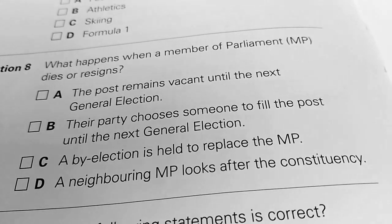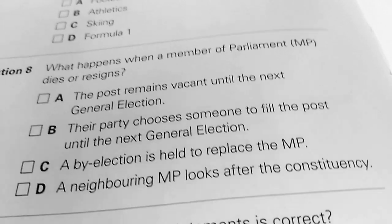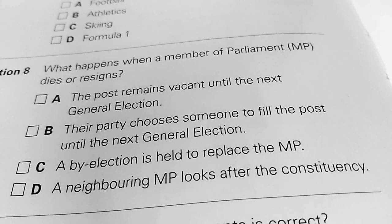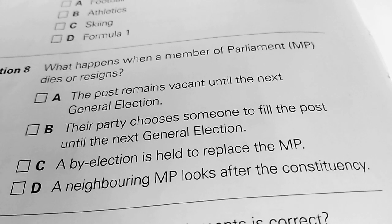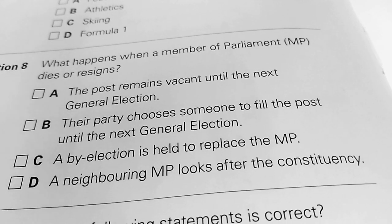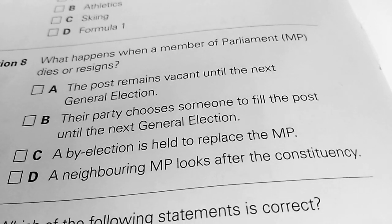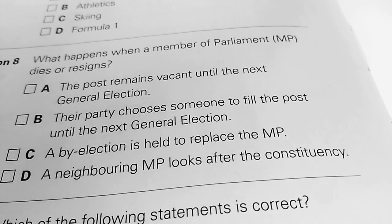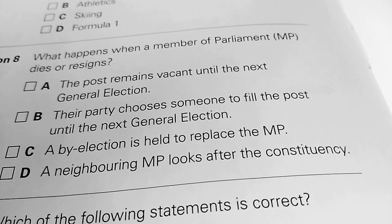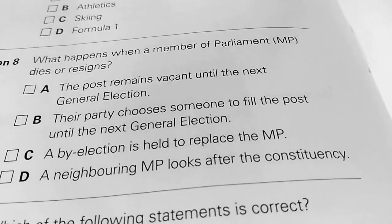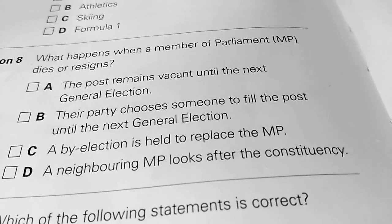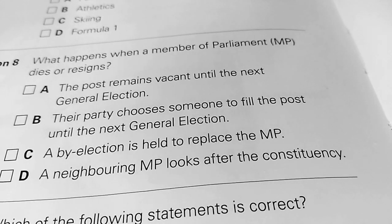Question number 8. What happens when a member of parliament dies or resigns? A: The post remains vacant until the next general election. Or B: The party chooses someone to fill the post until the next general election. The MP is chosen to look after the seat.